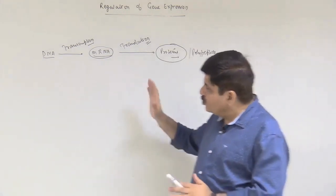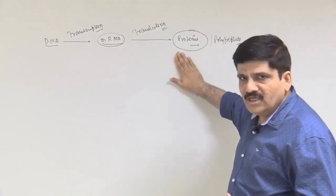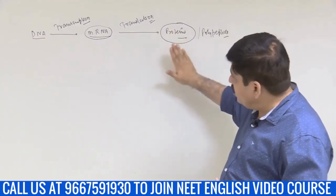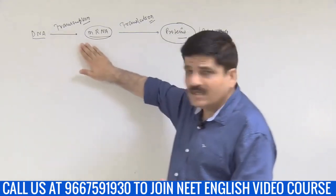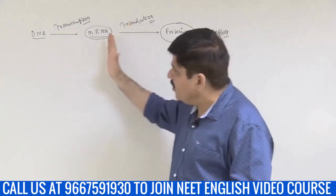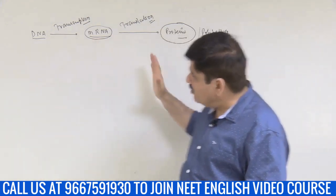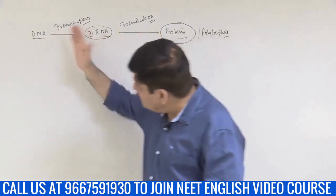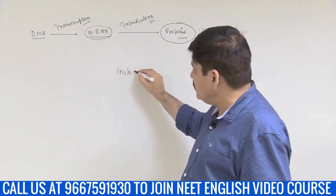If you want a protein not to be formed, the most logical step is to stop transcription — this is the most logical step. So you regulate gene expression at the level of transcription, because it does not make sense to allow transcription and splicing — the formation of the final messenger RNA — and then do something to stop it, as that would be a wastage of resources and energy. Therefore, if I want to regulate gene expression, it should be at the level of initiation of transcription.